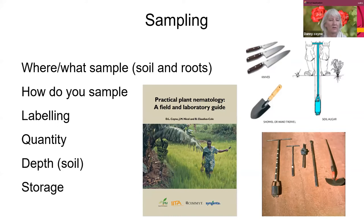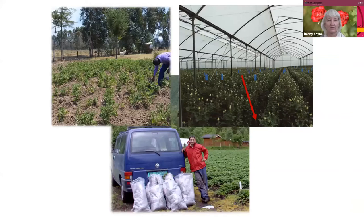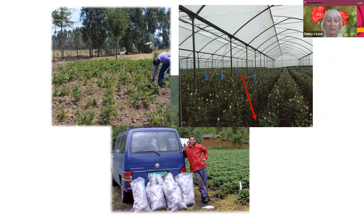Important also is storage — don't store your nematodes for long, these are live animals, and they don't tolerate sunlight or too much heat. Don't put the sample in the sun. Be aware of these things regarding sampling. This is just to show someone sampling a potato field — the arrow in the greenhouse indicates going into the root zone.